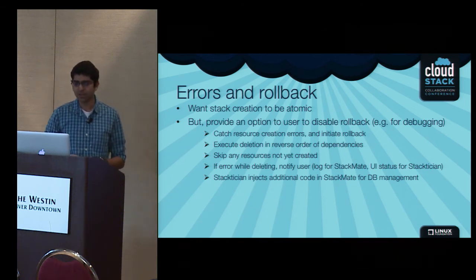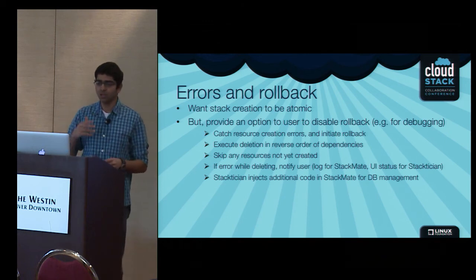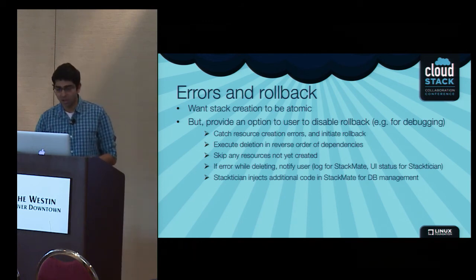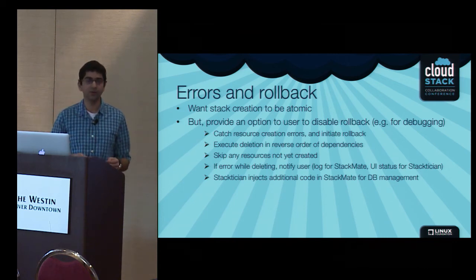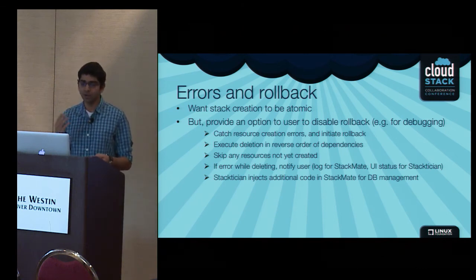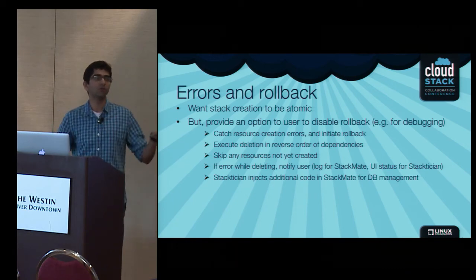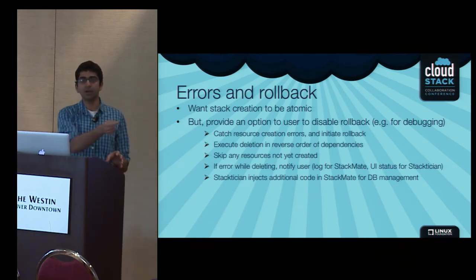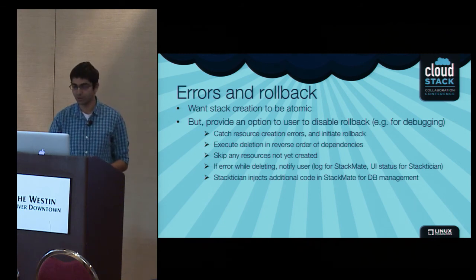For errors and rollback: stack creation should be atomic so users don't have to worry about cleanup. Given the defined acyclic graph and topological order, implementing rollbacks was straightforward — you execute the delete API of resources in reverse order, skipping any resources that were never created.